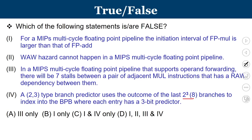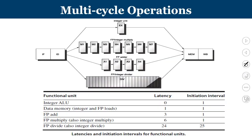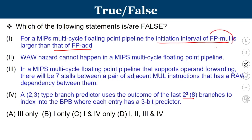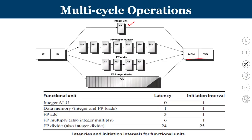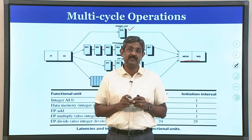The first statement is about the MIPS multi-cycle floating point pipeline and initiation interval. The initiation interval of floating point multiplication versus floating point add. In this multi-cycle pipeline, we have IF, ID, then branches for integer unit (1-cycle EX), a pipelined multiplier M1 to M7 (7 stages), a 4-stage pipelined floating point adder, and a 24-cycle division unit. The initiation interval means how much delay is needed before starting the same functional unit operation again.